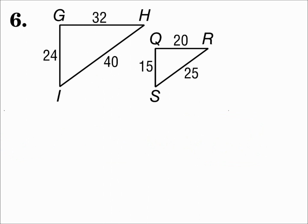Number six. We have two triangles with all three pairs of sides. Let's see if we have side-side-side similarity. Match up the side lengths: the long side on the left, 40, matches the long side on the right, 25. The middle side, 32, matches the middle side, 20. And the short side, 24, matches the short side, 15.